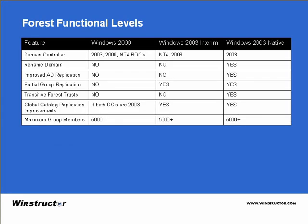Forest functional levels provide a way to enable forest-wide Active Directory features in your network. The first level is Windows 2000. When you first install a Windows 2003 server as a domain controller, or upgrade an existing domain controller to Windows Server 2003, it will by default run in Windows 2000 mode. This mode allows the Windows 2003 domain controller to interact with other domain controllers in the forest running Windows NT4, Windows 2000 Server, or Windows 2003 Server.